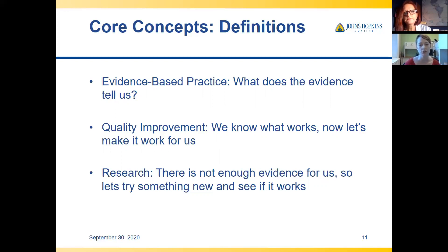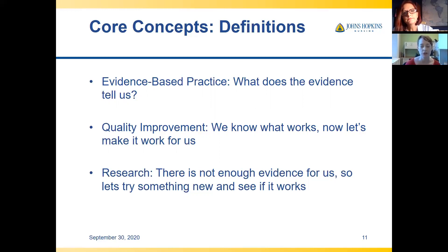For example, there's a lot of information about falls in orthopedic patients, but that information might not necessarily be transferable to a geriatric psychiatry clinic. Likewise, there's a lot of information about HIV testing in South Africa, but that might not be transferable to an urban academic setting in the United States. So looking at what information exists and whether it's applicable to your population might lead you down a different route — whether it's research, EBP, or QI.